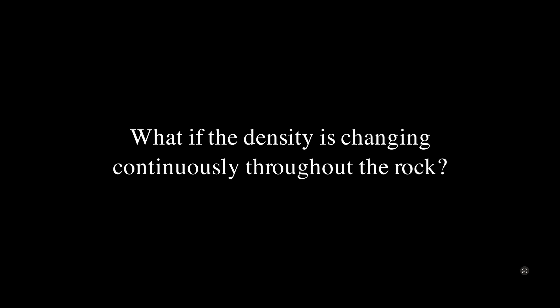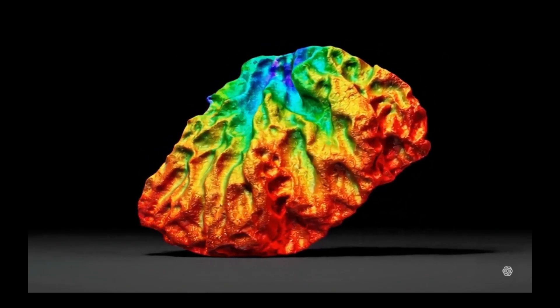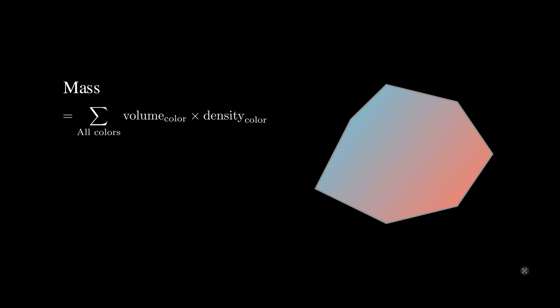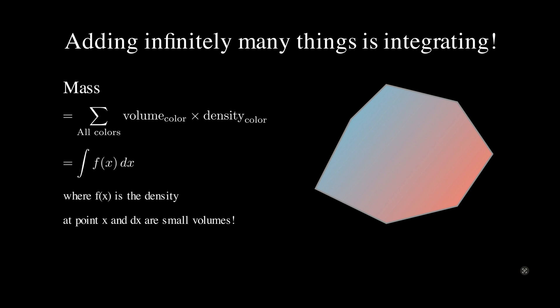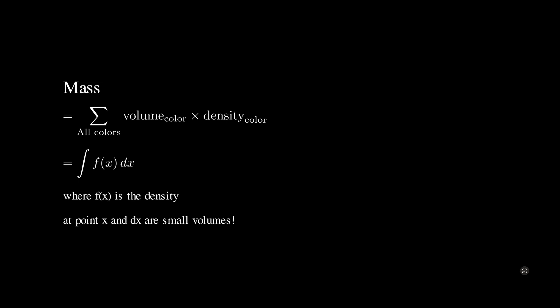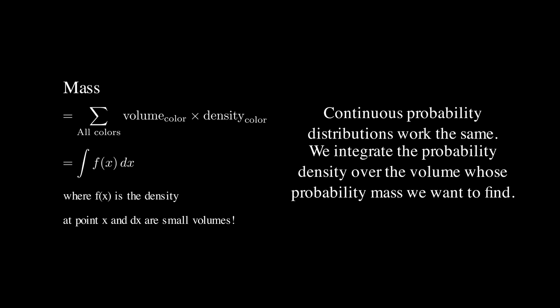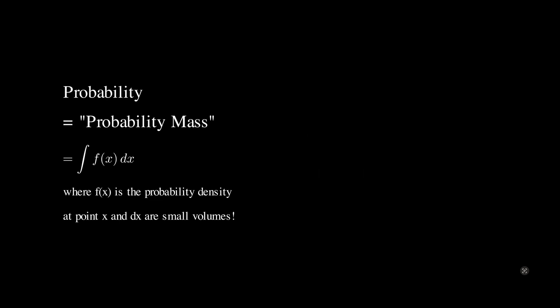But what if the density is changing continuously throughout the rock? We can't just break it into sections with the same density. If we could break it into really, really small sections, they would almost have the same density, and we could add up the density of each section. But there are infinitely many colors in a continuous gradient, so we are adding infinitely many things — adding infinitely many things is integrating. So what we're really doing is integrating the density over the entire volume, which we write as the integral of f(x) — the density at each point — times dx, which are small volumes. Continuous probability distributions work the same way.